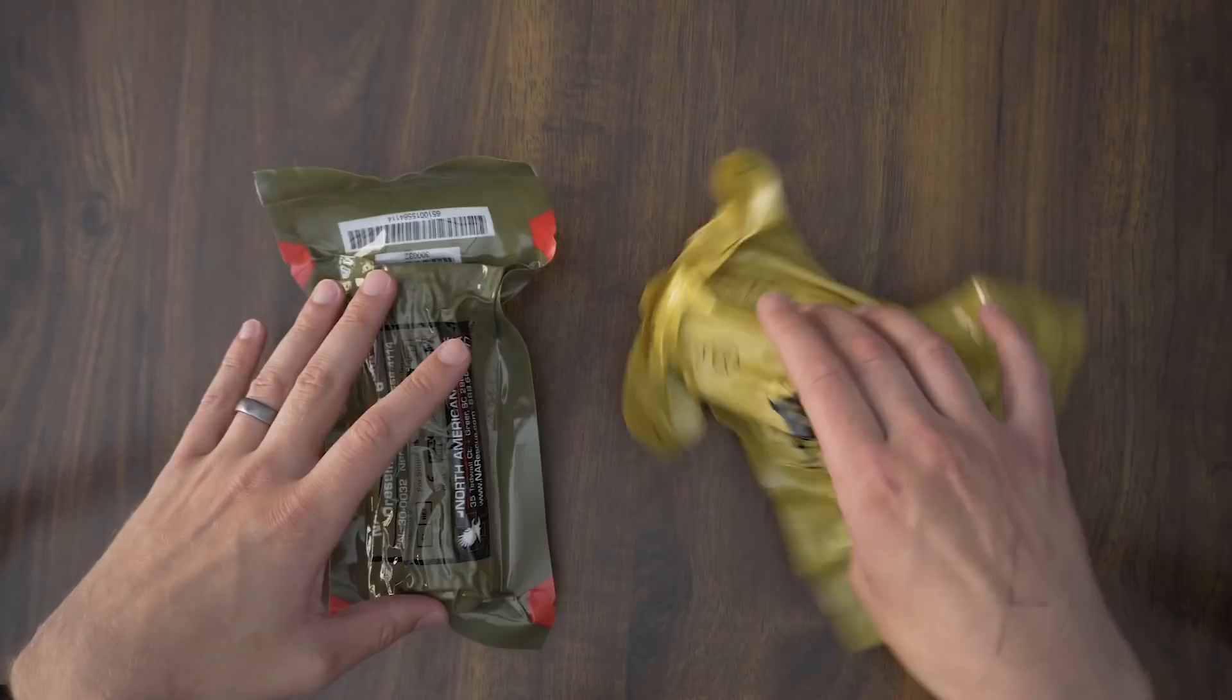So as far as packaging and what these come in, these are both the 6 inch versions of both company's products. Both come in a 4 inch version and then both have a flat pack version if the cylinder form factor doesn't really fit in your IFAC or wherever you're keeping this.